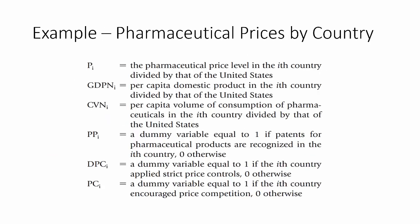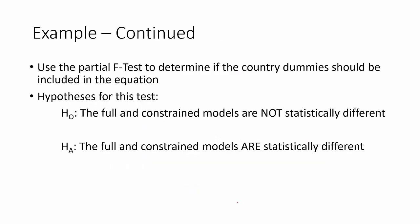We're going to use an example from the textbook looking at pharmaceutical prices across countries. P is the pharmaceutical price level in the country divided by the United States. We have GDP compared to the United States, the consumption of pharmaceuticals compared to the United States, and then several dummy variables: a dummy variable for patents, a dummy variable for strict price controls, and a dummy variable for price competition. We want to see if these differences in policies across countries impact the relative prices of pharmaceuticals, and we'll use this partial F-test to determine if those country dummies should be included in the equation or not.